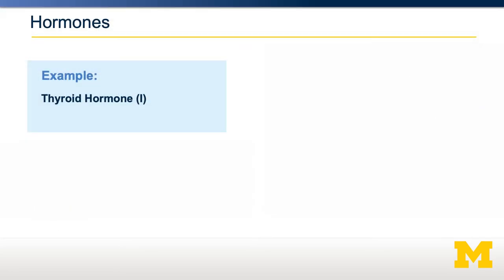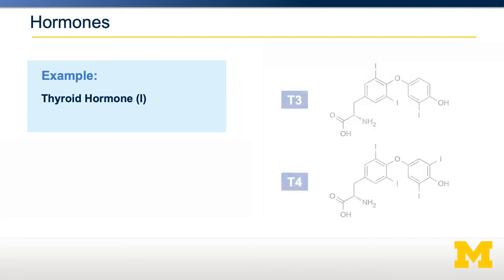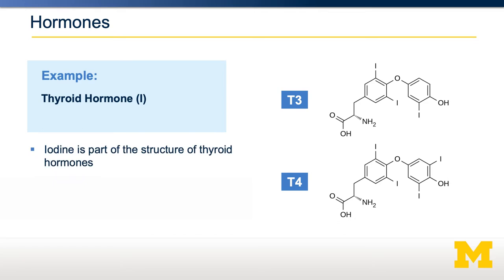Let's go through an example: thyroid hormone. Thyroid hormone requires the micronutrient iodine, abbreviated here as I. Shown here on the right is the structure of the two thyroid hormones, T3 and T4. You can see that intrinsic to the structure of both T3 and T4 are iodine atoms. That iodine must be obtained in our diet in order to be integrated into the thyroid hormones.